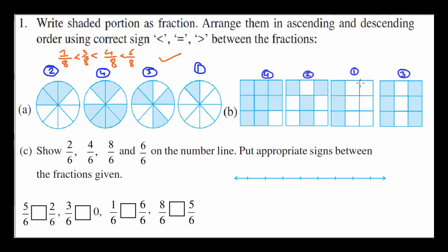Next one we have arranged it again. First is 3 out of 9, second is 4 out of 9, and similarly all things have been shaded up. Then we have to write 3 over 9 is less than 4 over 9, less than 6 over 9 and so on, 8 over 9.